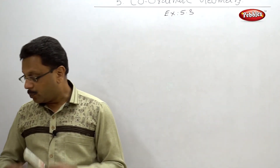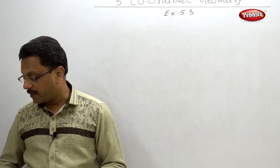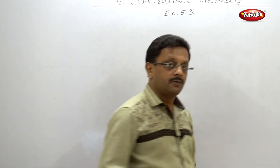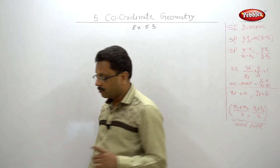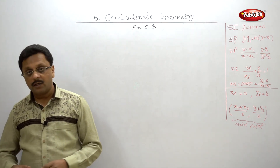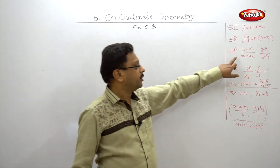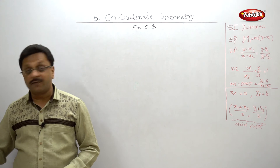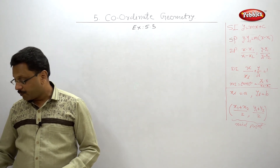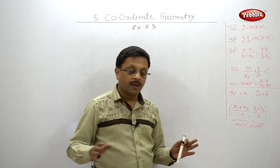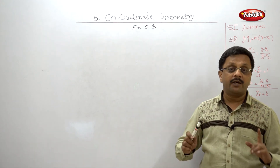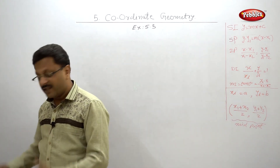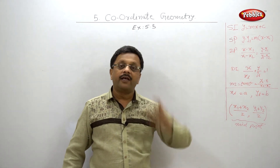Example number 7: two points of each line are given. Write the equations of the lines. Again, we use the two-point formula. There are six sub-questions, each with a pair of points. The first is A(−3, 4) and B(4, 5). You just substitute x₁, y₁ and x₂, y₂ into the two-point formula. They are not asked in any specific format here — write the equation of the line — so the final equation will be in linear form: Ax + By + C = 0. Just substitute and rearrange the terms.